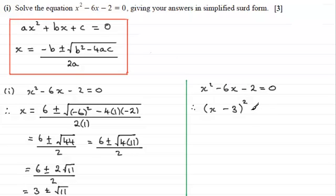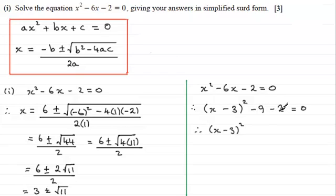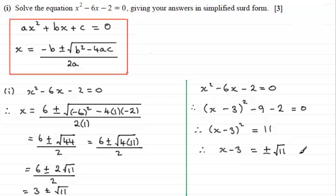There's no 9 in the original equation, so we take it away and put in the minus 2. This gives x squared minus 6x minus 2, which equals zero. So what we've got is x minus 3 all squared, and we've got minus 11 here. Adding 11 to both sides gives 11. Taking the square root of both sides gives x minus 3 on the left-hand side, plus or minus root 11 on the right. Adding 3 to both sides, we end up with x equals 3 plus or minus root 11 by completing the square. So either way, that's what you should end up with.